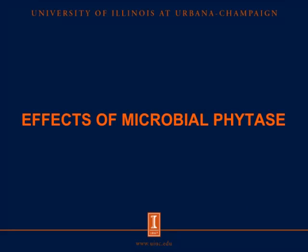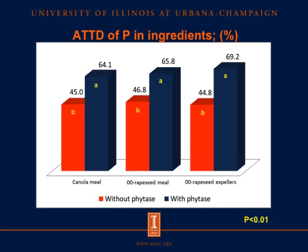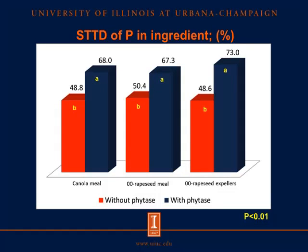Now discussing the effects of microbial phytase. For ATTD and STTD of phosphorus in canola meal and rapeseed products, orange bars represent without phytase and blue bars represent with phytase. ATTD and STTD of phosphorus in ingredients with phytase were greater than that in ingredients without phytase.